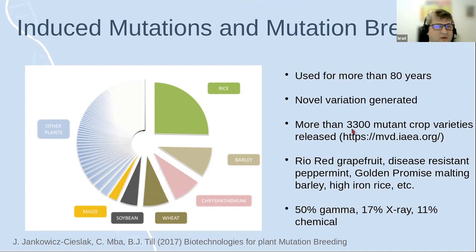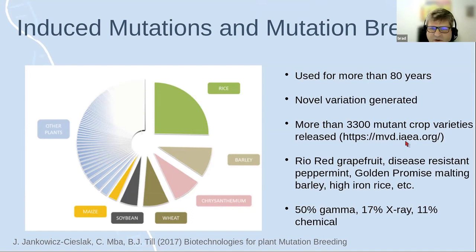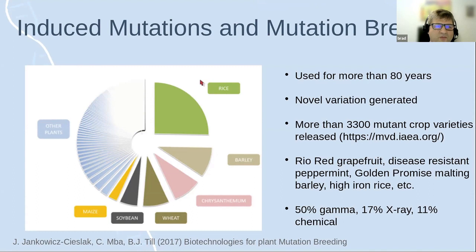Today there are more than 3,300 officially released mutant crop varieties in a database curated by the FAO/IAEA joint program in Austria. There are more than 200 species represented. Number one is rice — the most important food security crop in the world — followed by barley, used for food and malting.